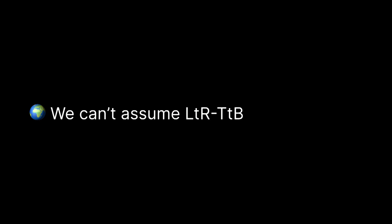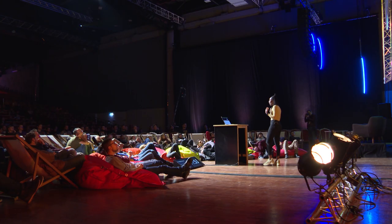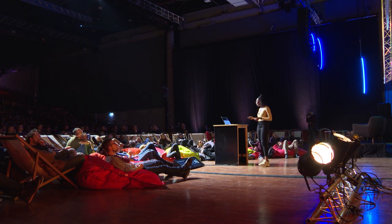First, with internationalization — we can no longer assume that web pages are going to be only written in left-to-right, top-to-bottom languages like English or French. CSS has actually been quite unnecessarily biased towards those types of languages. For example, if we wanted to add a margin to the start of a paragraph, we would say margin-left. And if we wanted to support a right-to-left language like Arabic, we would have to go back and override it. And that's because we didn't actually mean left — we just meant the start of the paragraph. That's where logical properties come in.